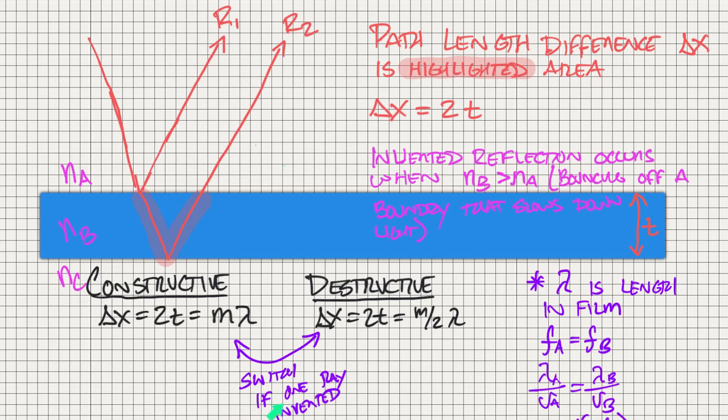We're going to switch this if one of the rays is inverted, and that happens based upon how the light reflects off. And this path length difference is going to equal two times the thickness of my film.